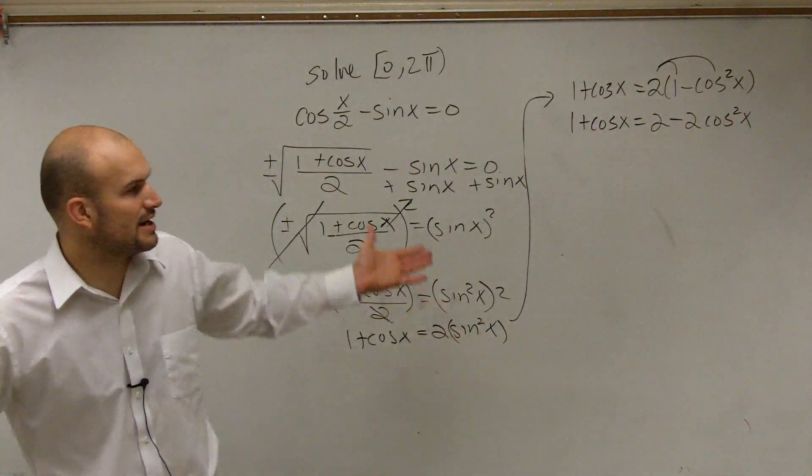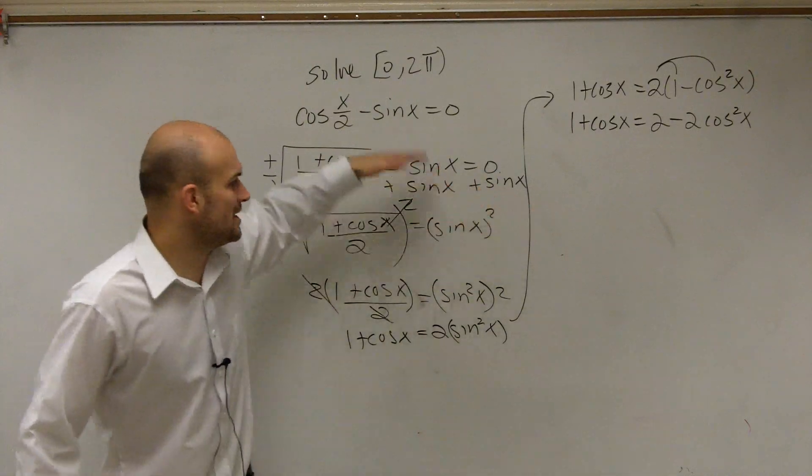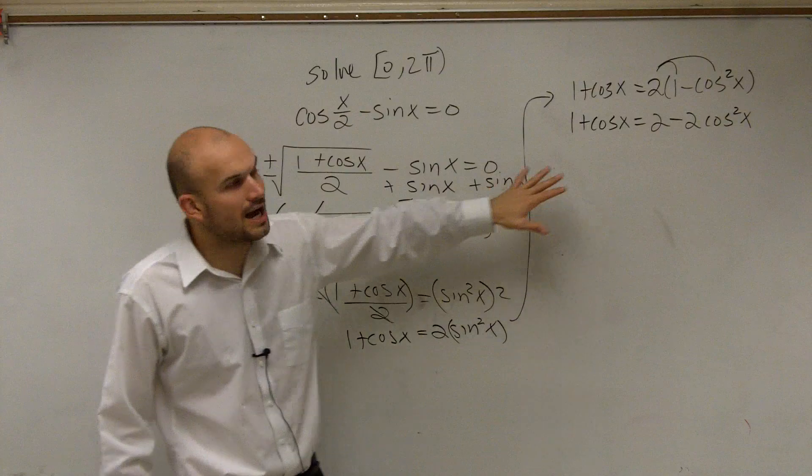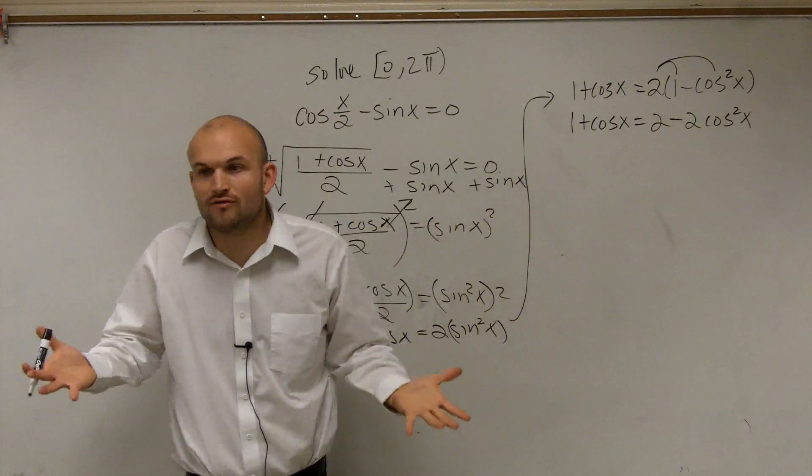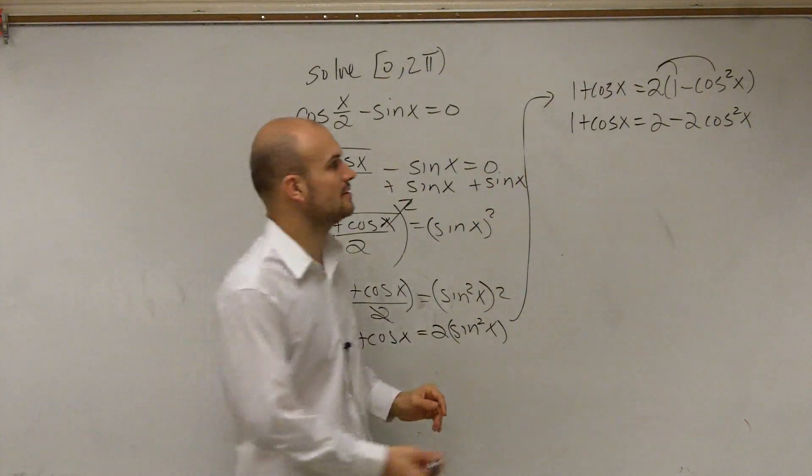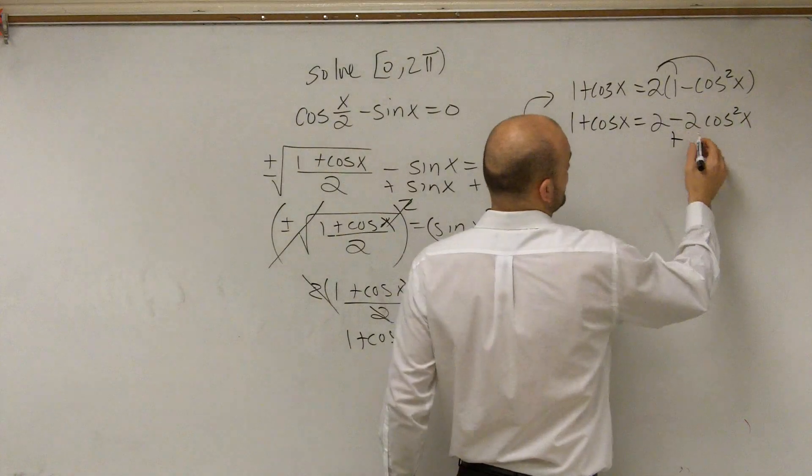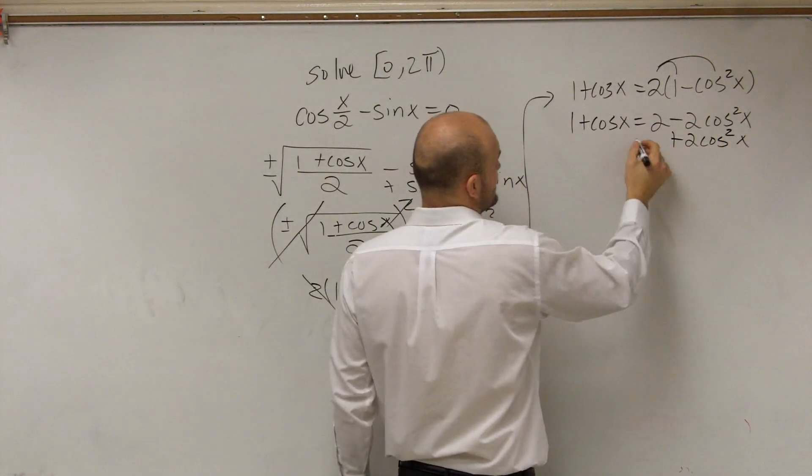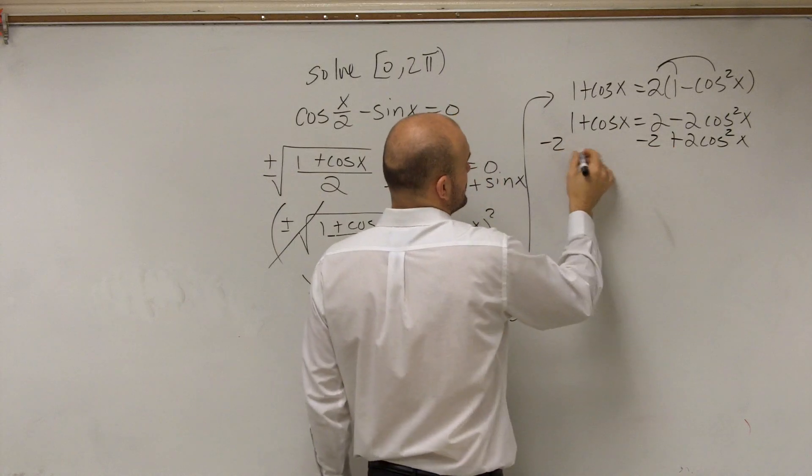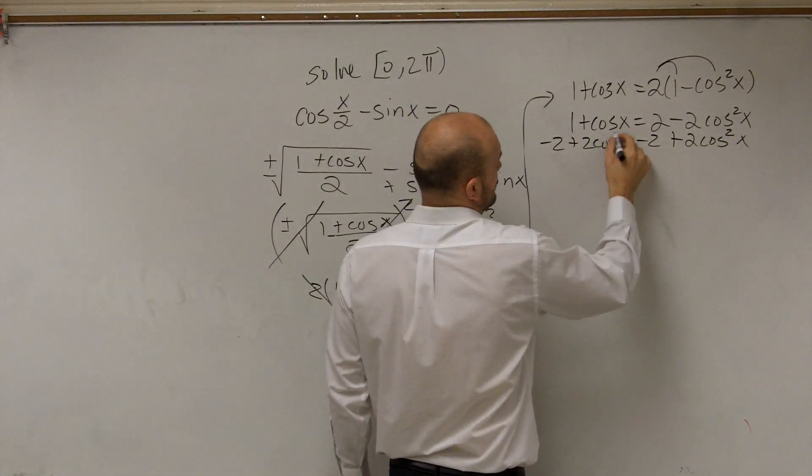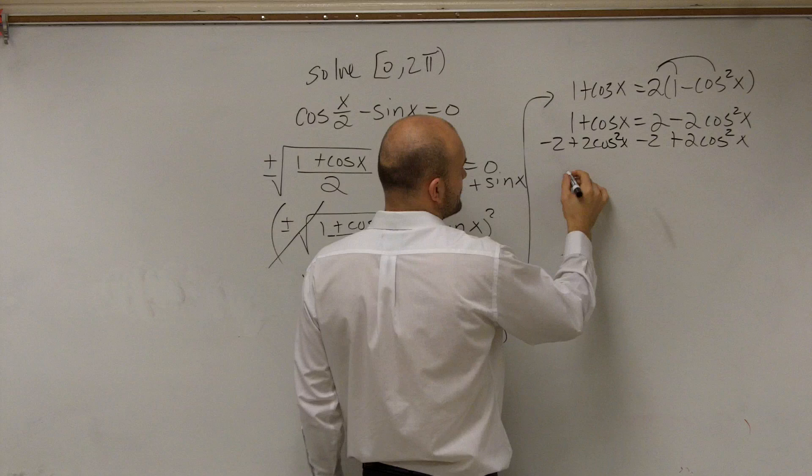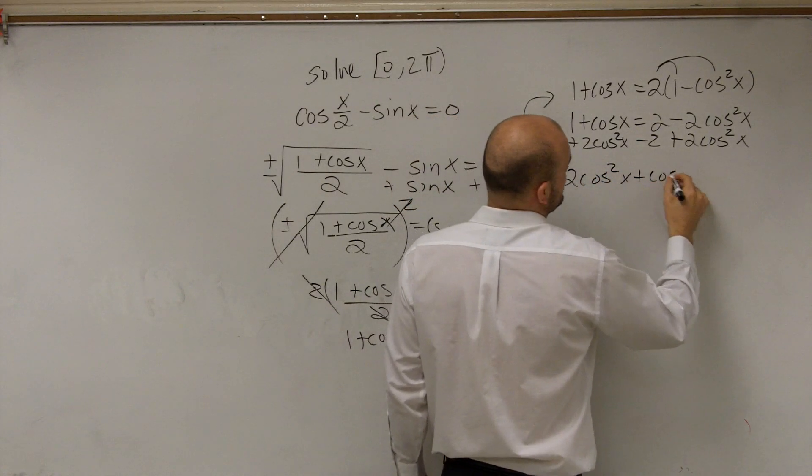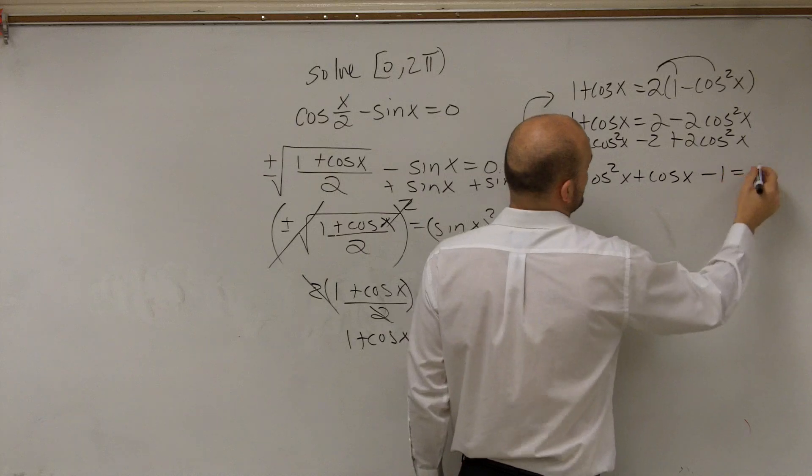So now, our main goal, guys, is when you have a problem like this, now we've done all this. We got rid of the square root. We got rid of the rational term. Now, to solve, we've got to get all of our variables on the same side. So let's add 2cos²(x) onto both sides, and let's subtract the 2 on both sides. Therefore, I'm now left with, in standard form, 2cos²(x) + cos(x) - 1 equals 0.